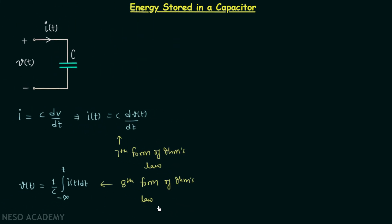We have already derived the first six forms of Ohm's law, and now we have the seventh and eighth forms of Ohm's law.